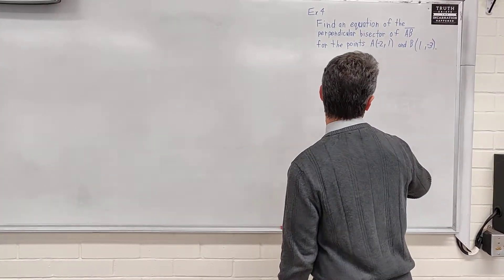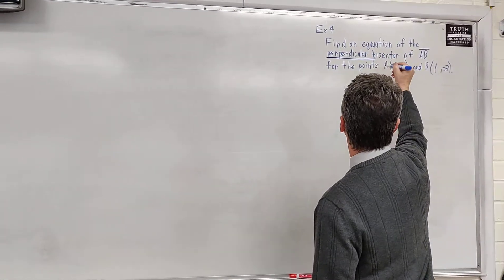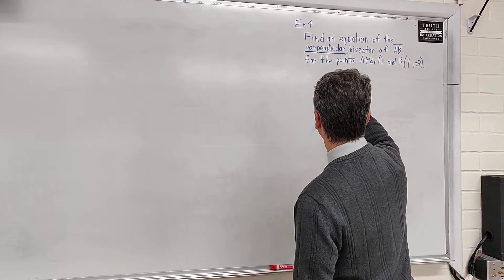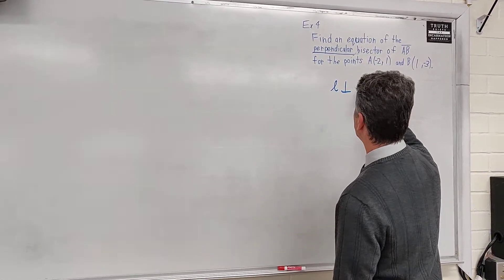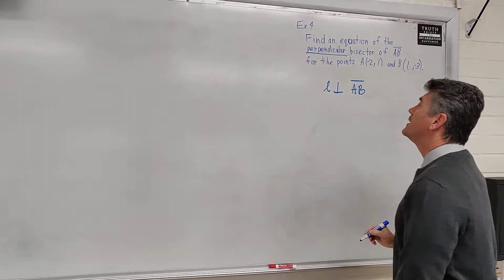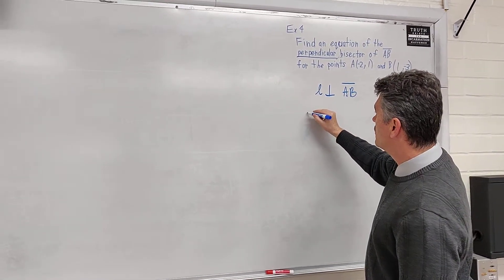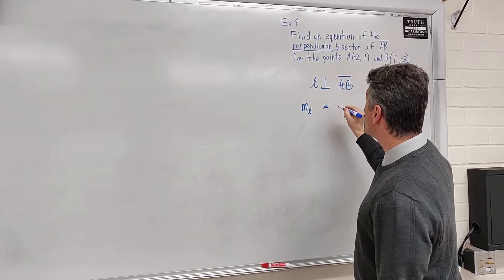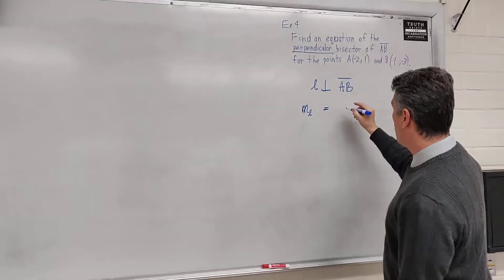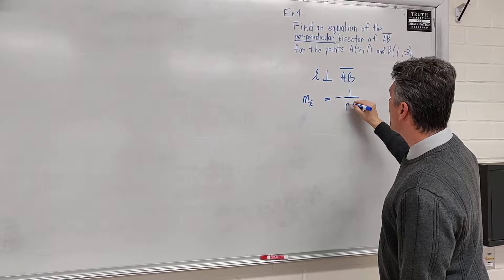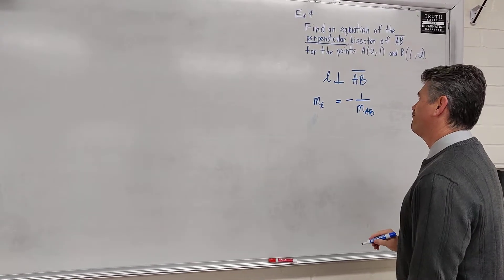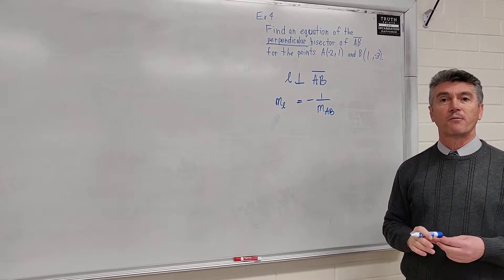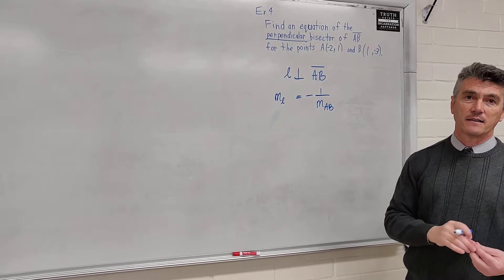So we start with this clue: perpendicular. If a line is perpendicular to segment AB, we know for sure that the slope of line L is equal to the negative reciprocal of the slope of segment AB. As you know, to figure out the equation of the line, we need two pieces of information — we need a point and we need a slope.